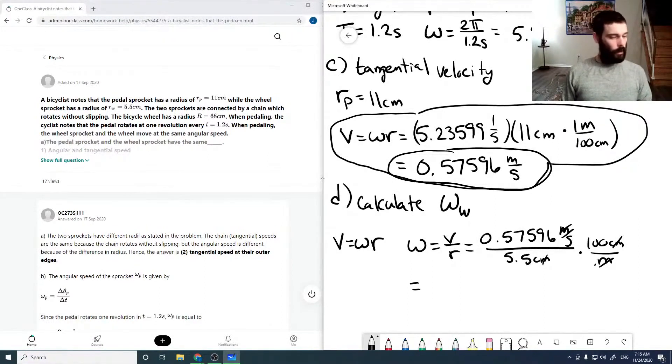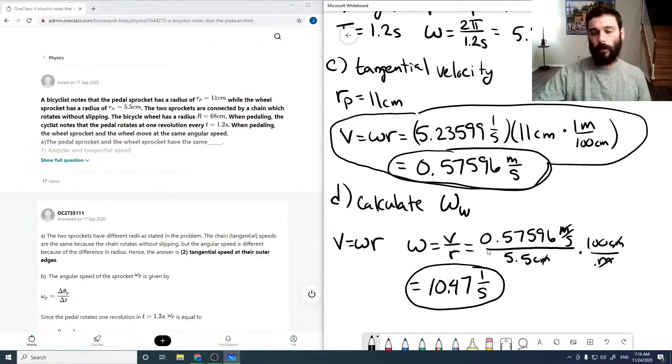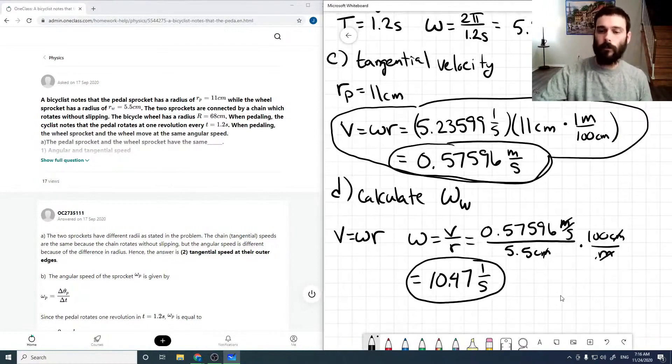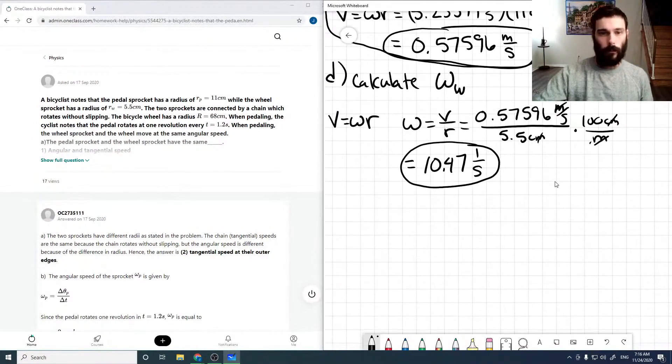And so, punching this through our calculator, we get 10.47, 1 over seconds. We would expect this as this frequency is about double the pedal sprocket, and the wheel sprocket is about half the radius of the pedal sprocket, so that means that's what we would expect from that conversion. So moving to a half radius is going to double the frequency.